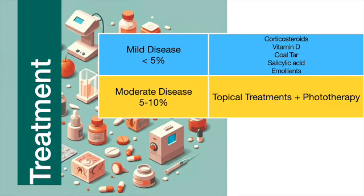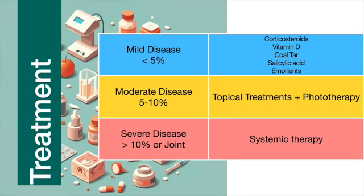Moderate psoriasis, considered 5% to 10% body surface area, may require a combination of topical treatments and phototherapy. Severe psoriasis, considered greater than 10% body surface area, typically necessitates systemic therapy. Systemic treatments include oral immunosuppressants like methotrexate and cyclosporine, which require regular monitoring of liver and kidney function, as well as newer agents.